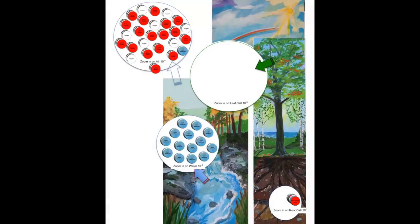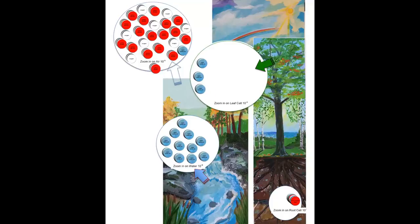Now we're going to zoom out a little bit to look at the whole system. Water molecules in the groundwater or the river are absorbed into the ground and then picked up by the roots of the tree and absorbed into the leaves — that's how water molecules end up in the cells of the leaves and available for photosynthesis. In this example, we're going to bring four water molecules into the leaf. In the atmosphere, you can see there's carbon dioxide, oxygen, water vapor, nitrogen, and other gases, but we're focusing primarily on carbon dioxide, oxygen, and water vapor.